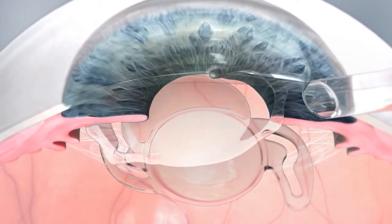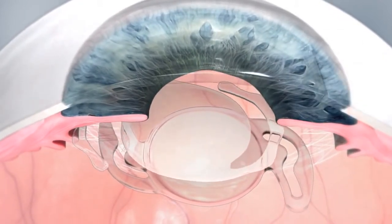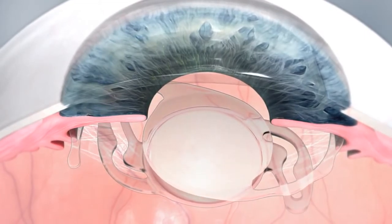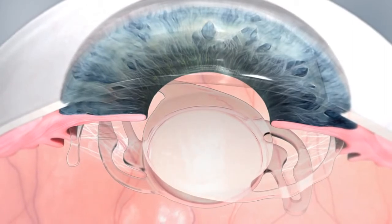With the nozzle in the incision, depress the plunger in a slow and controlled manner and the SulcoFlex IOL unfolds in a smooth movement into the ciliary sulcus.